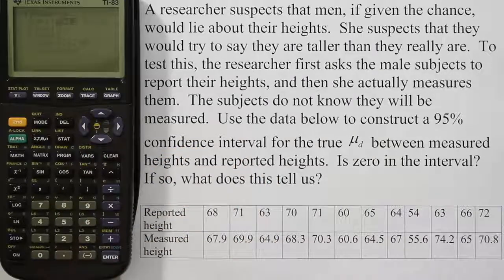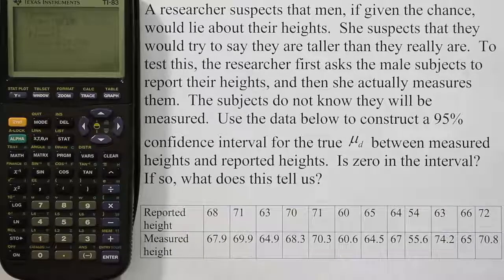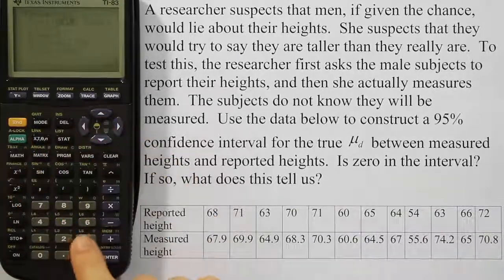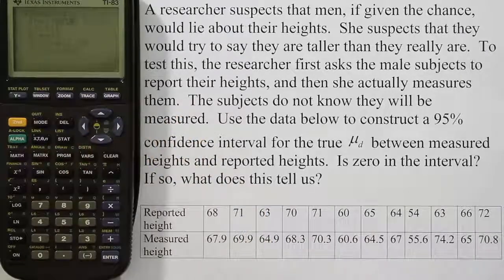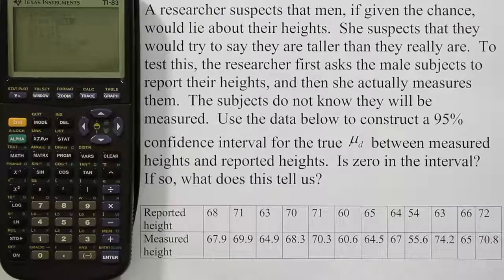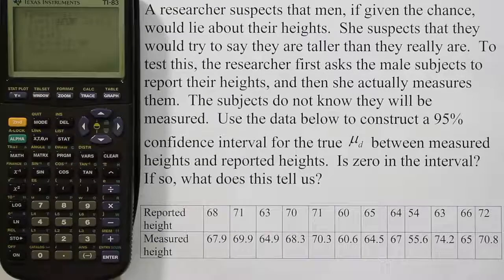Arrow down to where it says list. Mine is saying list three already and that's good because that's where the data is stored. If yours doesn't say list three, you're going to hit 2nd and the option three. And that will put list three in that position. Then you arrow down to where it says frequency and you should leave that as a one. If it isn't a one, you should put a one there. That's just telling the calculator that each of those values is only going to be represented once.